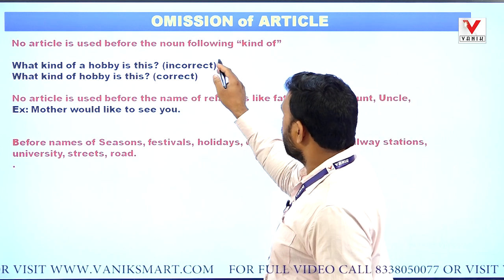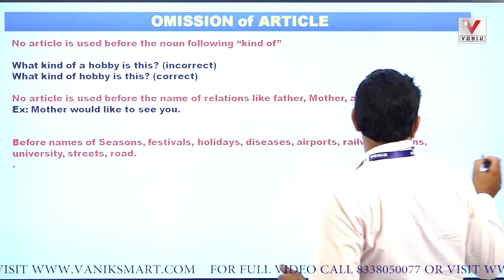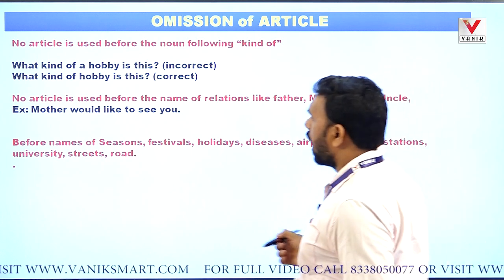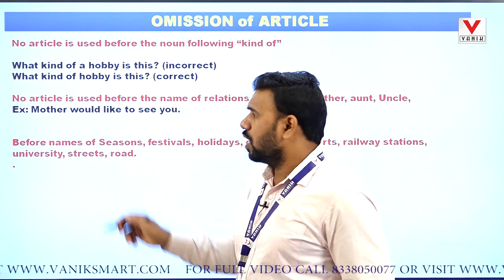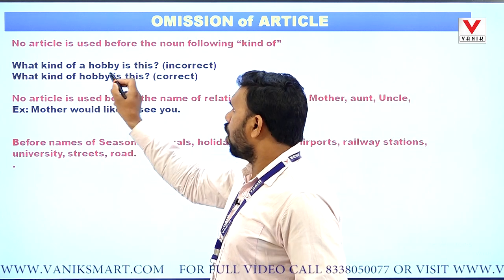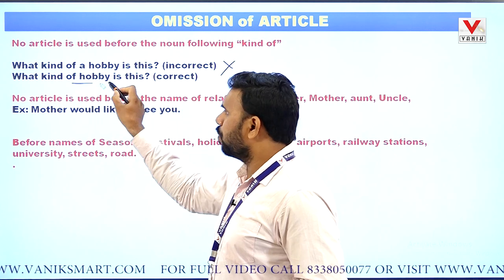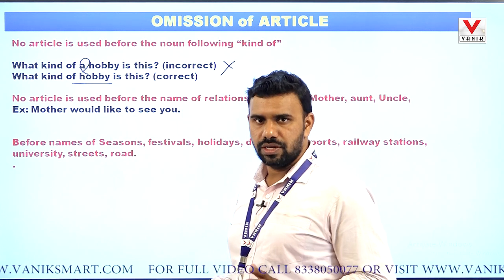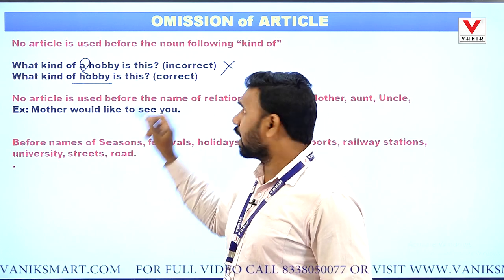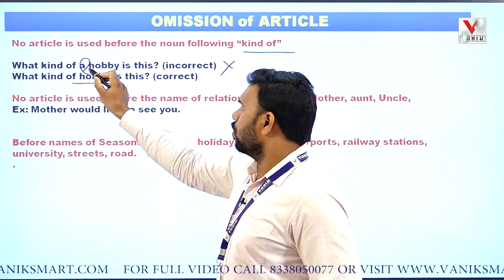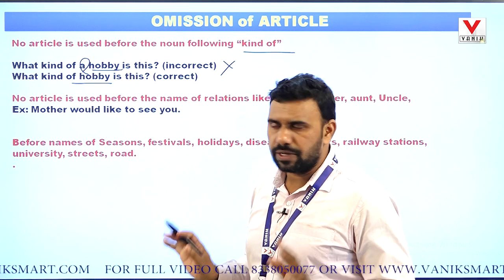No article is used before a noun following 'kind of'. Remember: if any noun follows 'kind of', do not use an article before that noun. For example, 'What kind of hobby is this?' — not 'What kind of a hobby is this?' After 'kind of', if a noun comes, do not use an article.